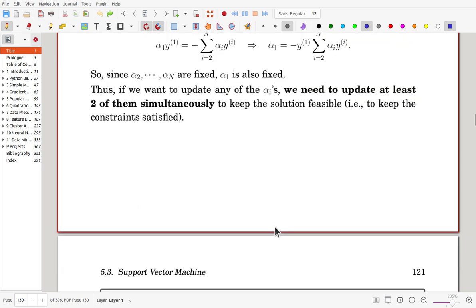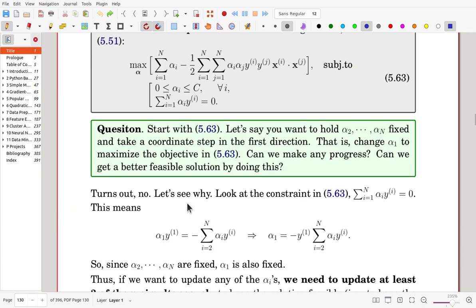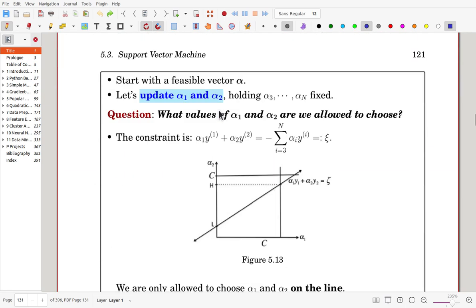Here is the SMO. We start with a feasible vector alpha, which means that we initialize alpha values satisfying this inequality and equality constraints. Start with an initialization. And we will try to update alpha 1 and alpha 2 holding the remainder values fixed.